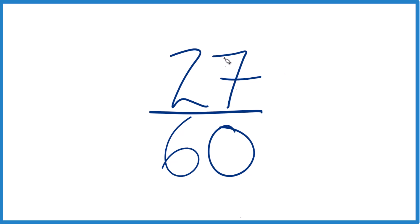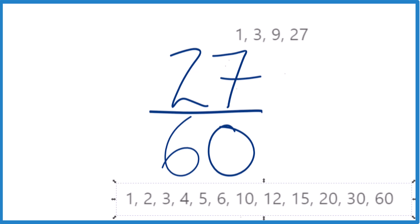So let's put the factors for 27 and 60 up here. Lots of factors for 60. So for 27, 1 times 27 and 3 times 9. Those are the factors for 27.